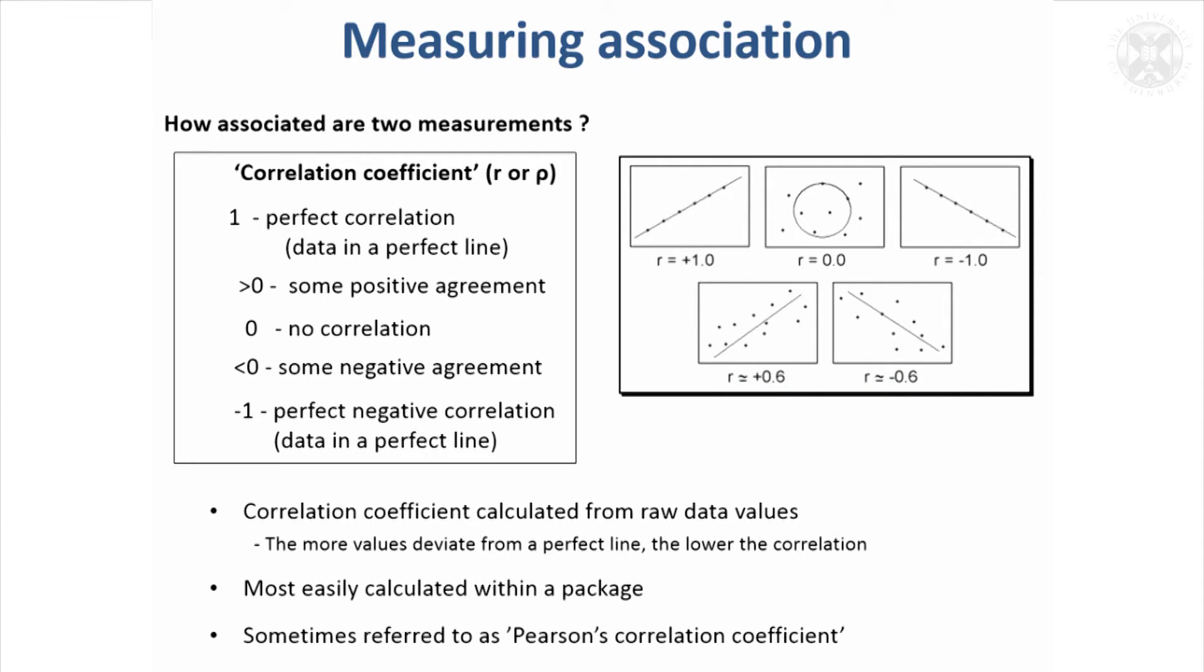Correlations can be calculated by hand, but almost certainly better calculated now in a package. And the usual correlation coefficient that you calculate, which can be denoted by r or sometimes rho, is known as the Pearson correlation coefficient. So that's the conventional correlation coefficient that gets calculated.